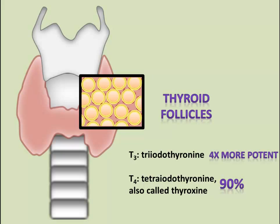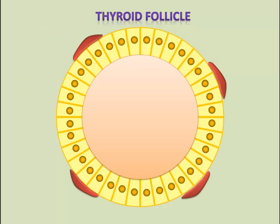Thyroid hormone production has both intracellular and extracellular components. If we examined a thyroid follicle, we would see that it is filled with a protein-rich material called colloid. Follicular cells surround the centralized colloid and secrete proteins into it. The follicular cells are closely associated with capillaries, which are used to deliver iodide molecules to the cells. Iodide molecules are obtained from the diet and are essential to the production of thyroid hormones. The capillaries are also an important release site for the thyroid hormones once they are produced.